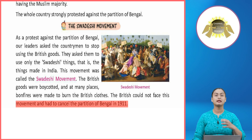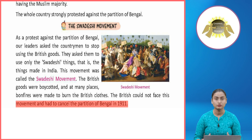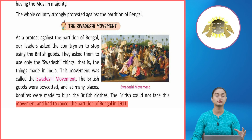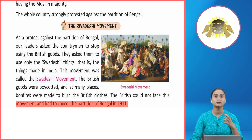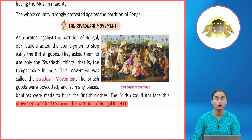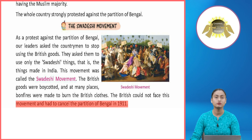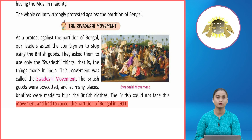Uske baad, jab alag alag parts of the country mein alag alag protest hone lage — bonfires, processions, demonstrations nikaale jane lage partition of Bengal ke liye — logon ne British goods, British institutions, offices aur schools ka boycott karna start kar diya. Toh haar maan kar, 1911 mein Britishers ko partition of Bengal ko rokna pada, radd karna pada.